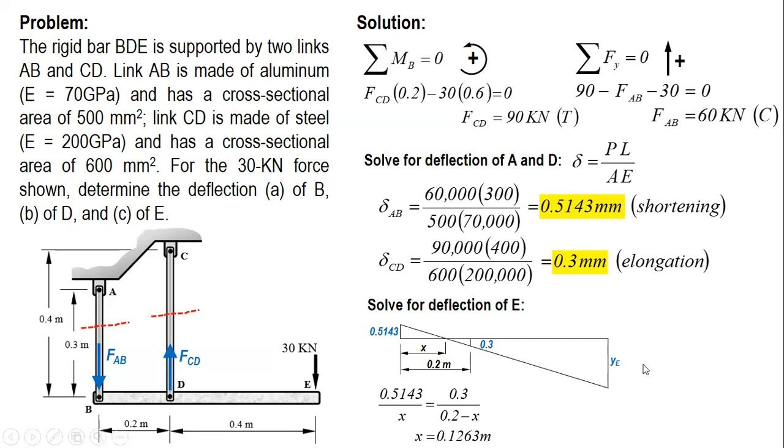After this, we can solve for Y sub E. This is 0.4, the distance from D to E. So our ratio is 0.5143 over X equals Y sub E over 0.4 plus 0.2 minus X, or simply 0.6 minus X.